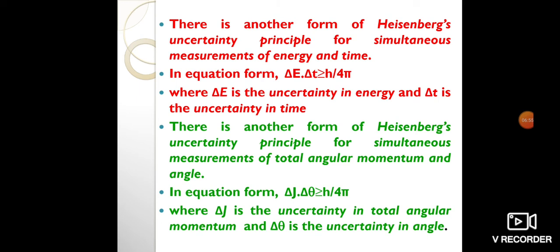There is another form of Heisenberg's uncertainty principle for simultaneous measurements of energy and time. In equation form, ΔEΔt ≥ h/4π, where ΔE is the uncertainty in energy and Δt is the uncertainty in time.